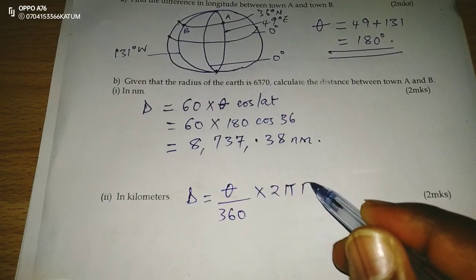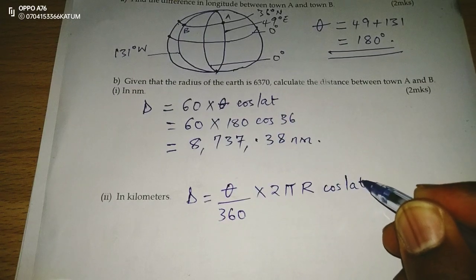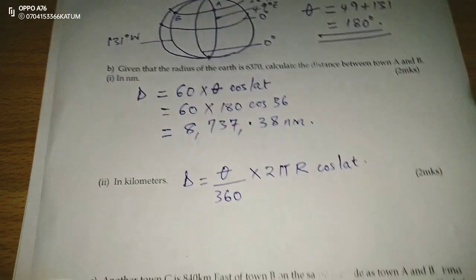times 2 pi r cosine of the latitude. So in this case,